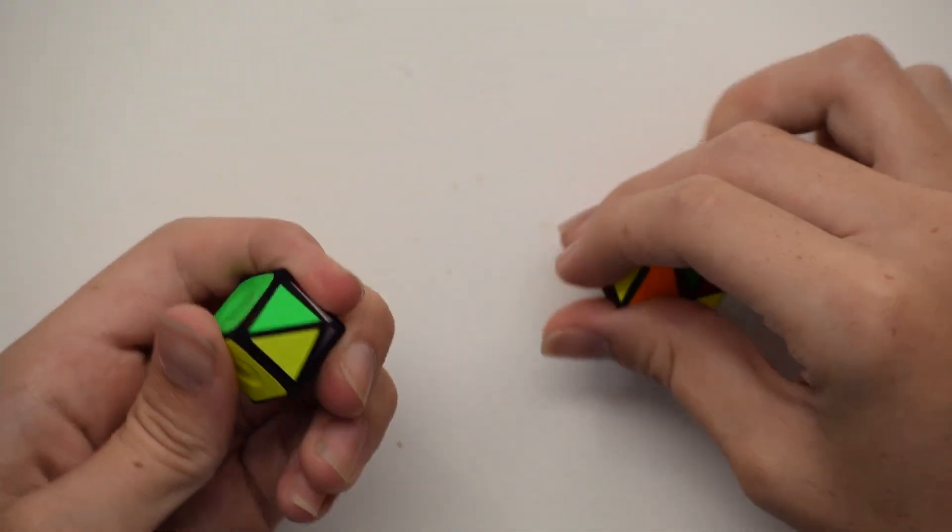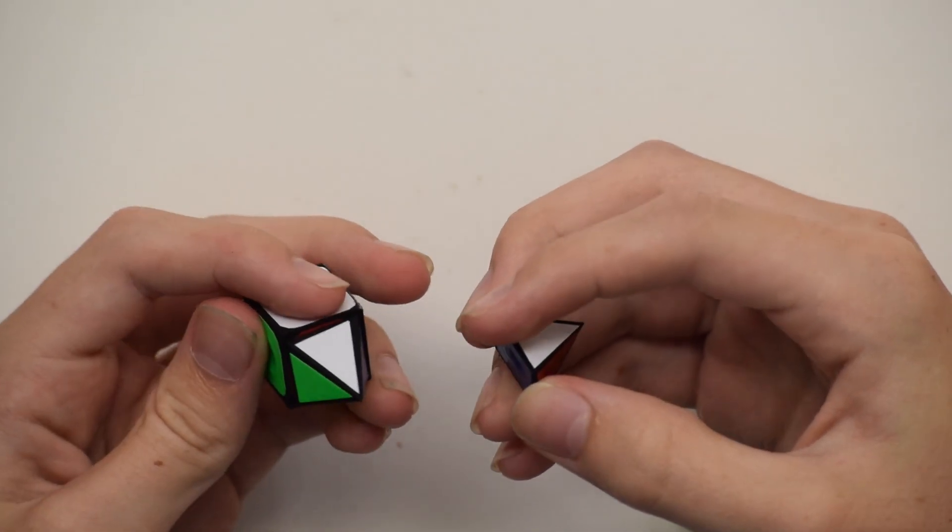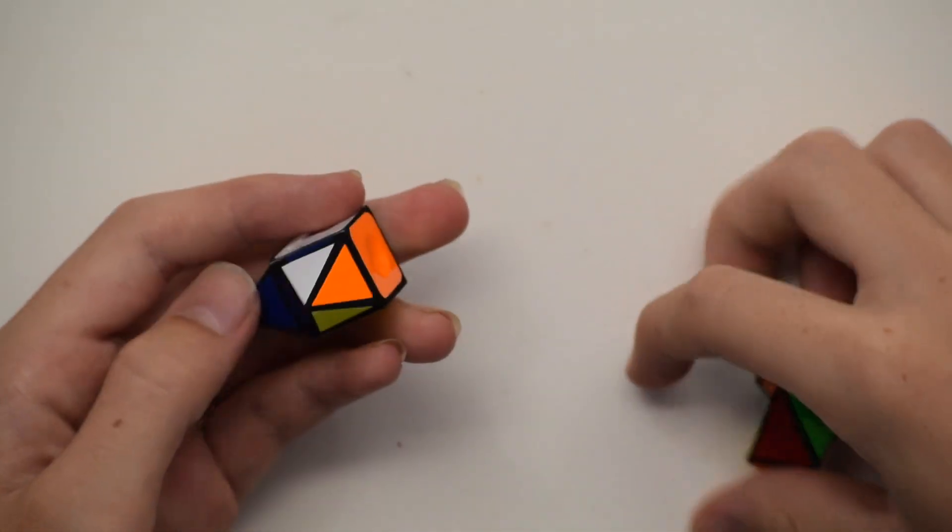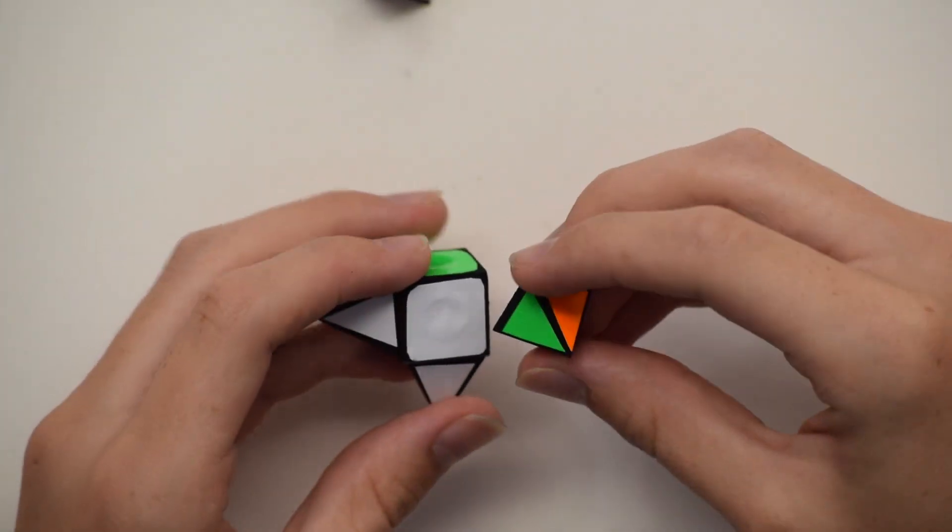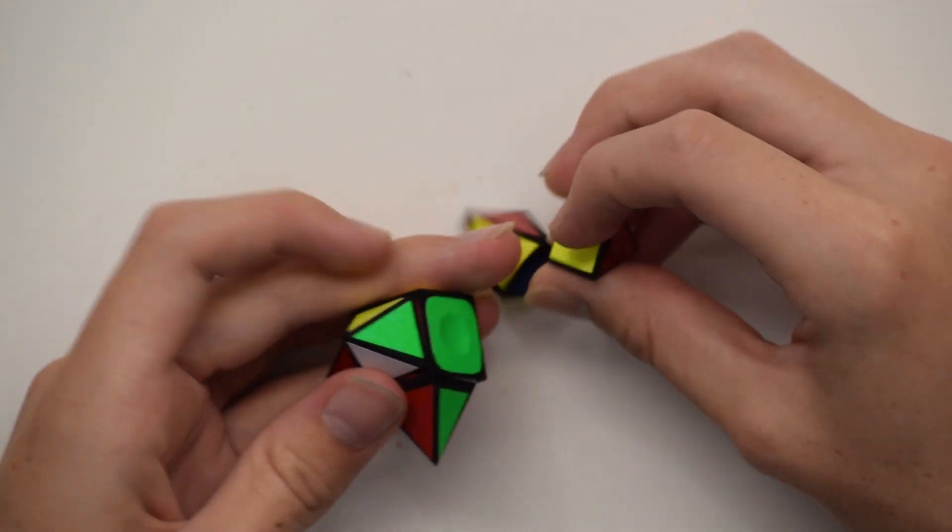As you can see, the puzzle does take a while to solve from the scrambled state into the solved state, because you not only have to put each tip on the correct face, but then you have to rotate them so they all match. Turning on this puzzle is very good. The tips all turn smoothly when magnetically attached to the 1x1.